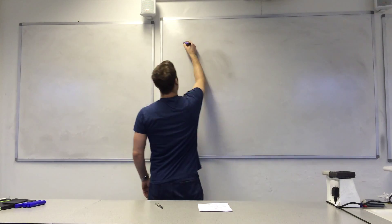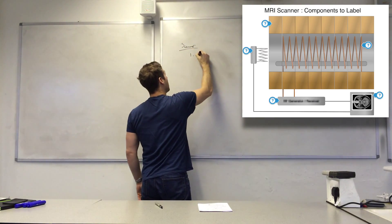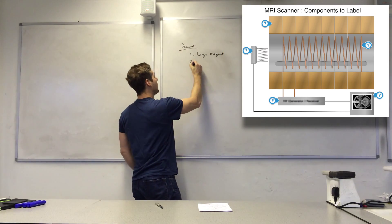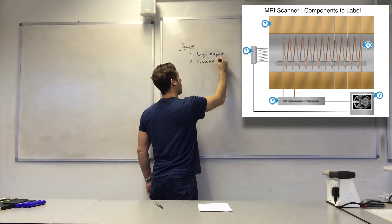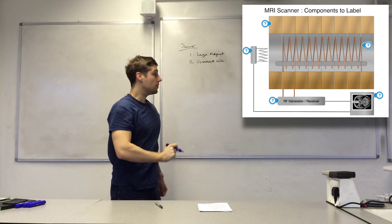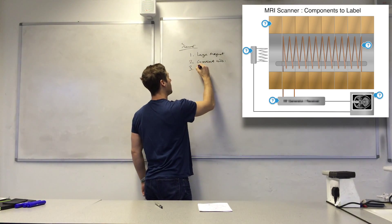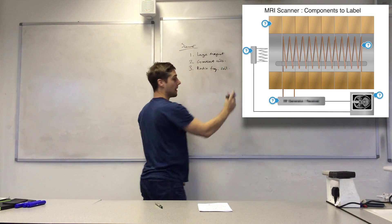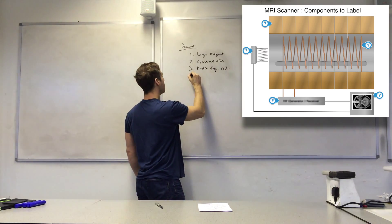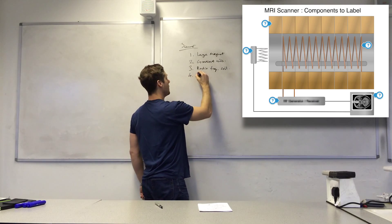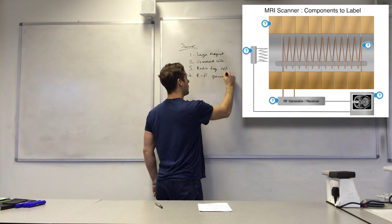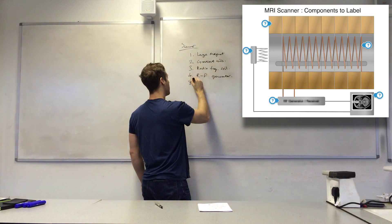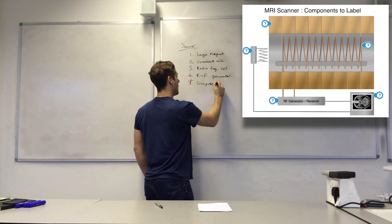Okay, so let's do the scanner first. Firstly, you need a large magnet, then you need gradient coils, and three, a radiofrequency coil, and four is the radiofrequency generator, and number five is a computer.